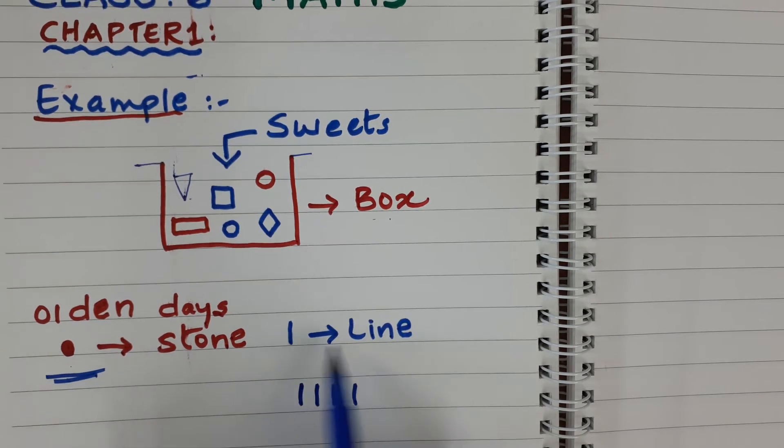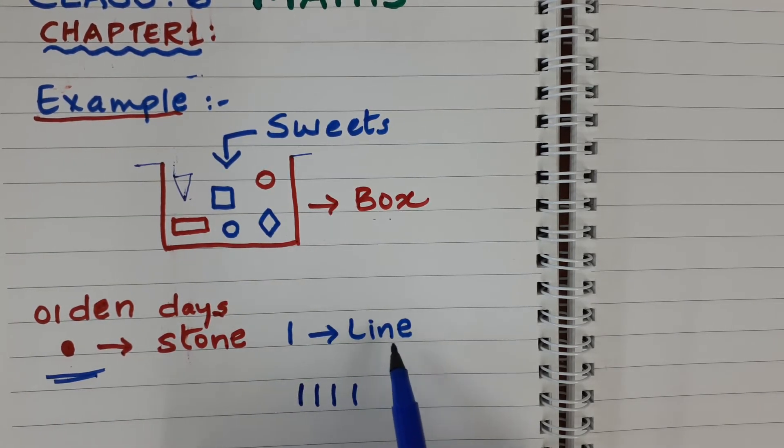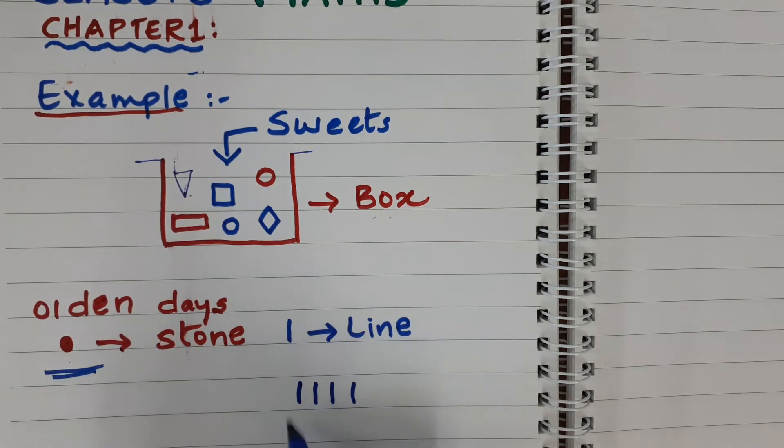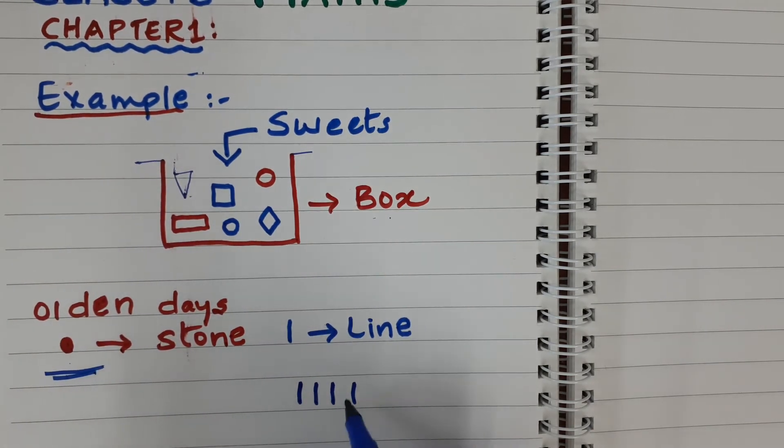Some people used to draw lines to count the things they had. For one thing, they would draw one line. For the second thing, another line. Third thing, another line.